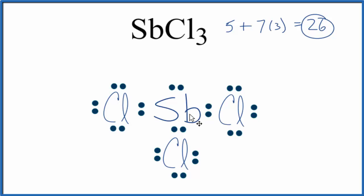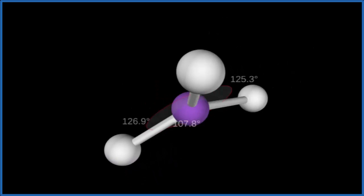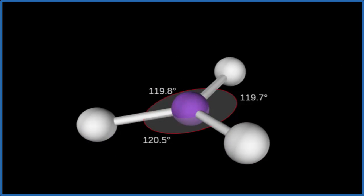If we wanted to look at the molecular geometry, let's visualize this. The purple, that's the central Sb. And then we're going to put the 3 chlorines around it. 1, 2, they're spreading out to be as far away as they can from each other. 3, we get this trigonal planar structure.